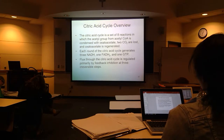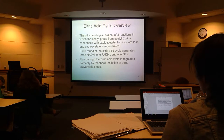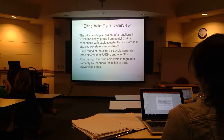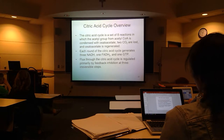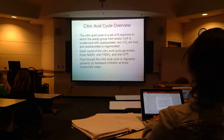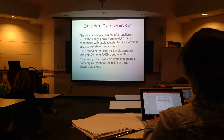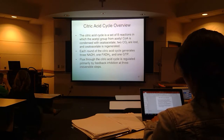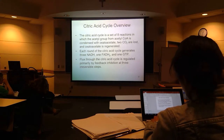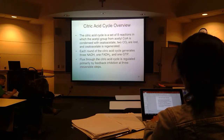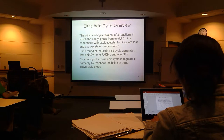We don't actually have very much substrate-level phosphorylation here, but all these reduced cofactors will allow us to generate a lot of ATP later in the electron transport chain. The overall regulation of this cycle, as we'll see built into each step, is product inhibition. Product inhibition of both steps is regulating the flux through this cycle.